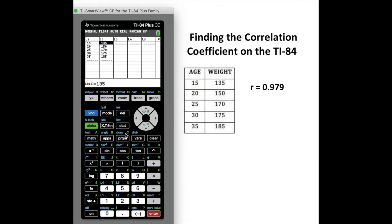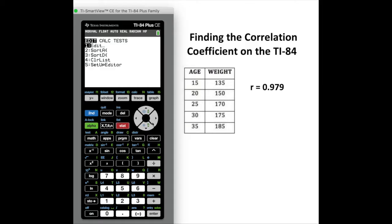Once that's completed, you can hit your STAT button and arrow over to CALC, and then choose 4. You can either arrow down or choose 4. This is going to give us a linear regression.